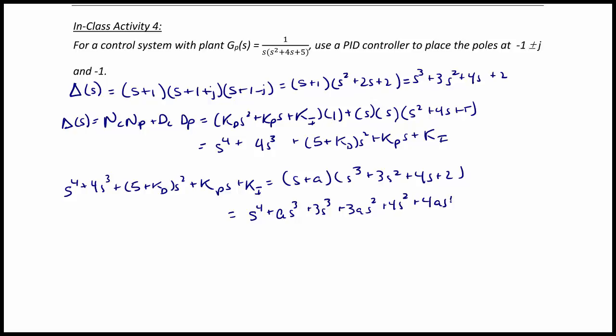And the final answer is s to the 4th plus the quantity 3 plus a s cubed plus the quantity 4 plus 3a s squared, plus 2 plus 4a s, and finally 2a.